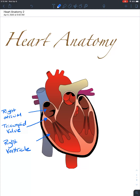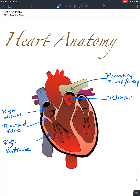Blood is then going to flow from the right ventricle out the pulmonary trunk, which is also the pulmonary artery. Any blood vessel leaving the heart is an artery. And here is another set of valves — these are the pulmonary semilunar valves.